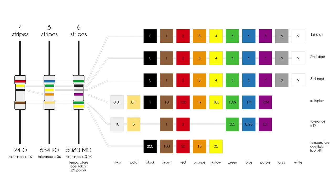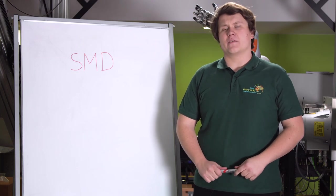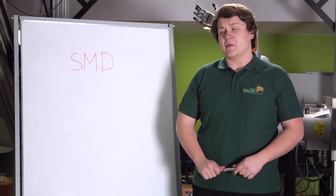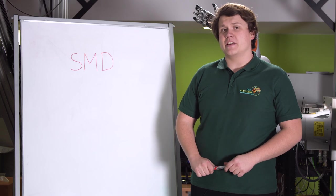Tolerance is a parameter that tells us how much the actual value can differ from the one written on the component. For example, if our resistor has 100 ohms and the tolerance is 5%, it means it should have 100 ohms but its actual value can be in a range of 95 to 105 ohms. The last and very popular method of marking resistors is marking them on surface mount devices (SMD).